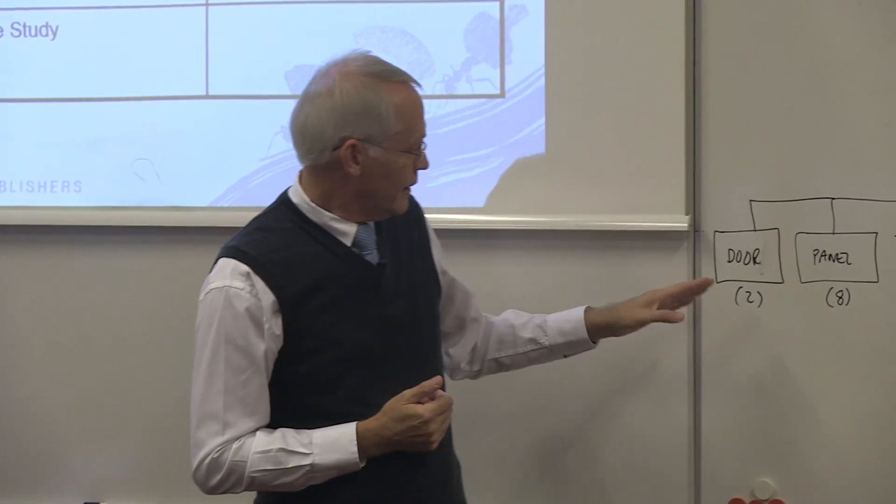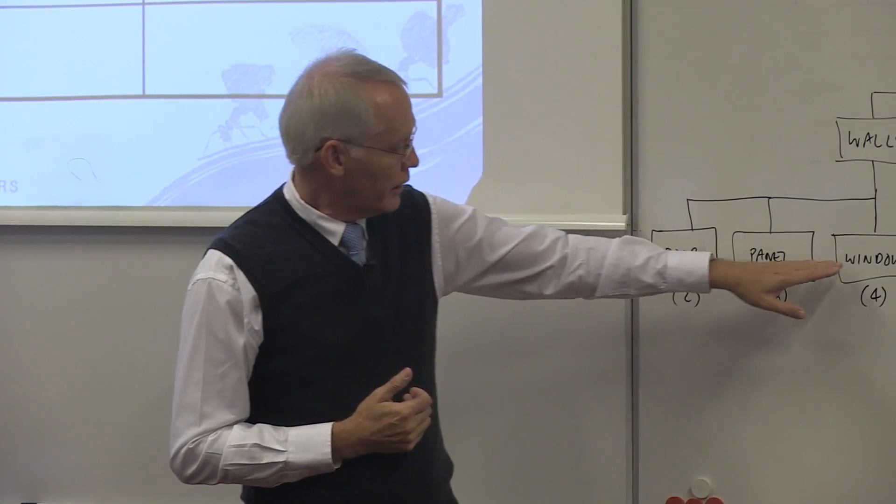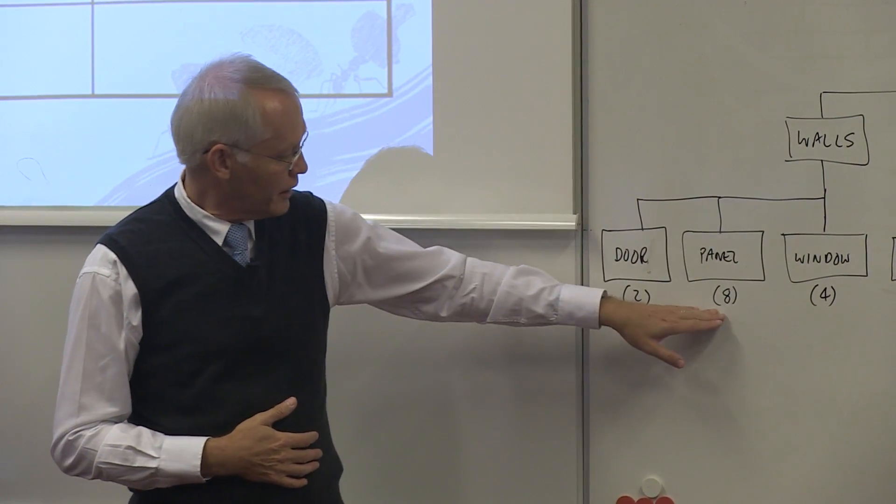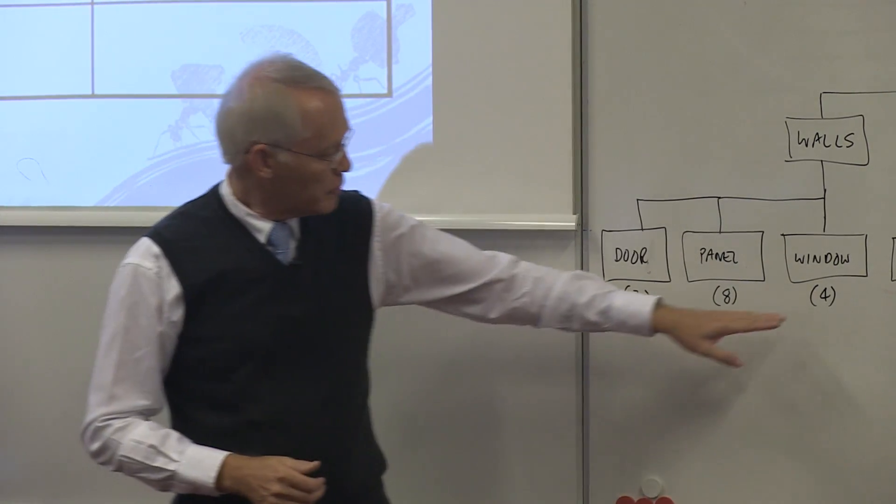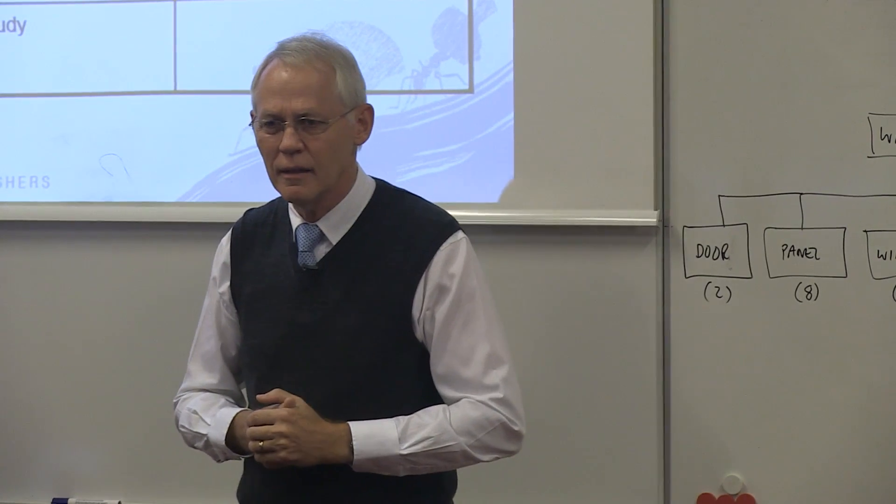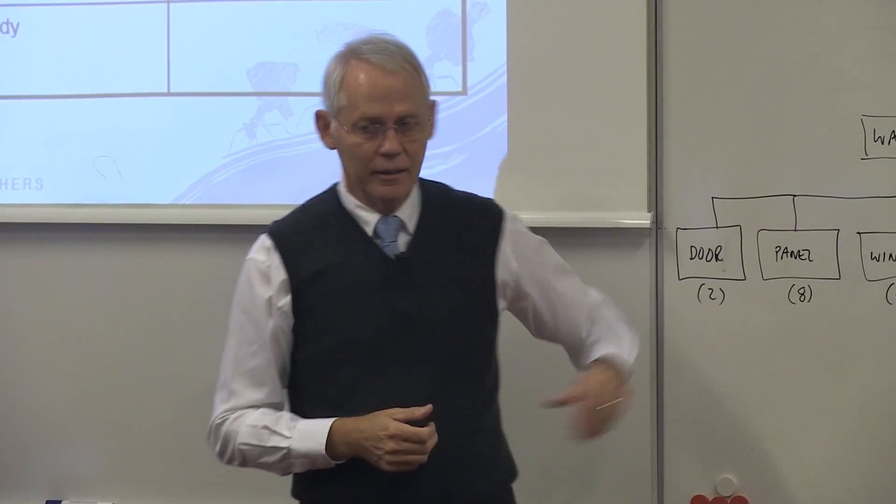So clearly I've got a door, I've got a panel, and I've got a window. Maybe I have a front door and a back door - two doors. Maybe I need eight panels, two on each side, and maybe I need four windows that fit into those panels. Is that sort of reasonable? Right, so I can start building my shelter.